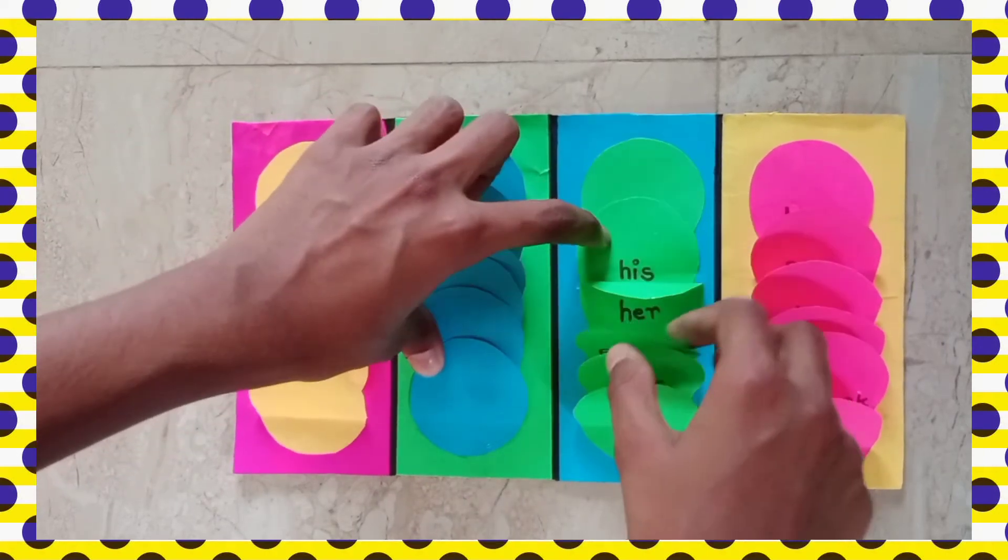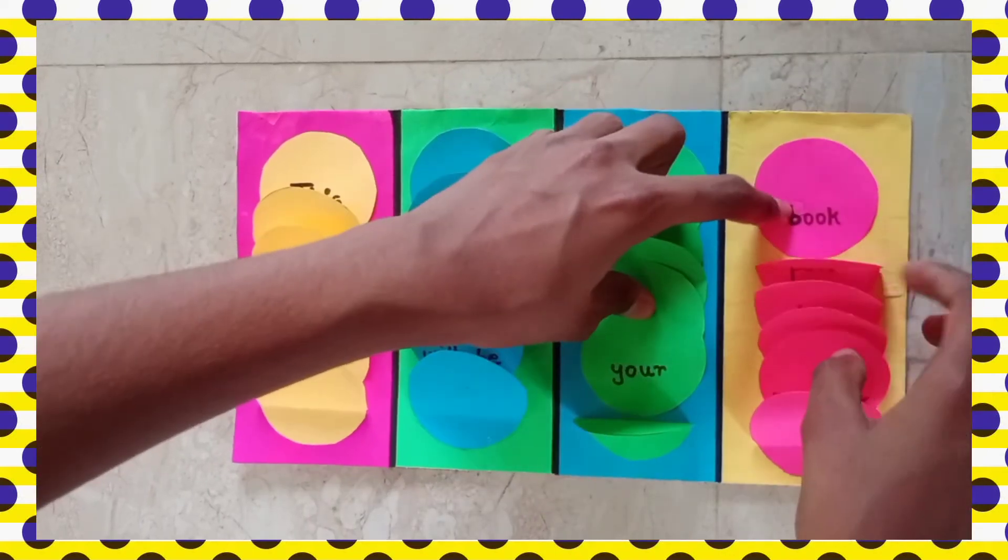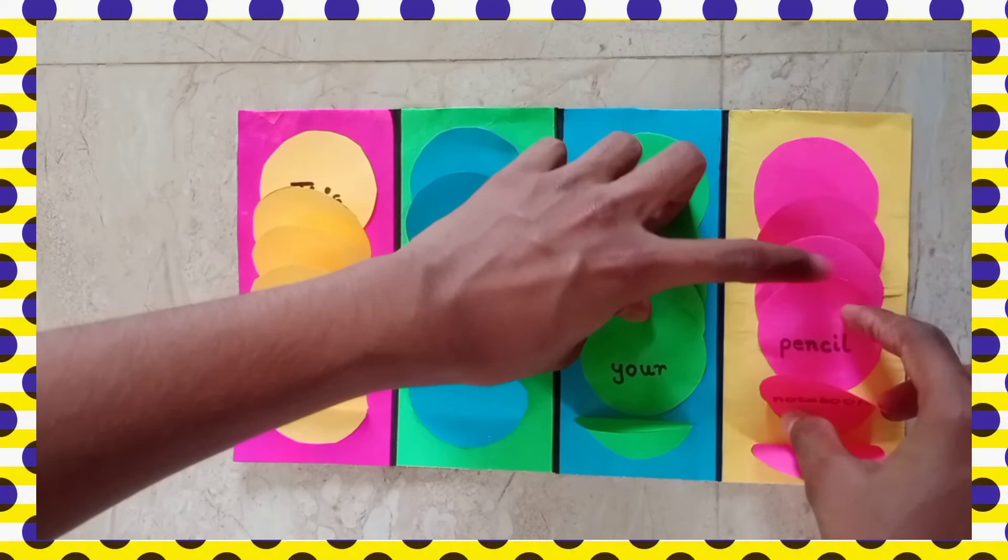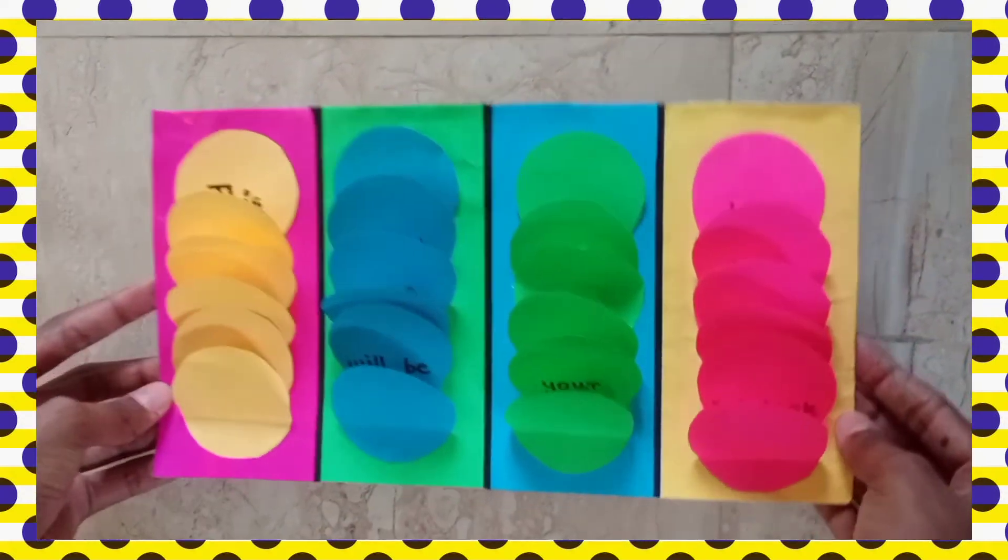Next: my, his, her, Raju's, yours. Book, pen, bag, pencil, notebook. So these are all the words which make the 625 sentences. Hope this is useful. Thanks for watching.